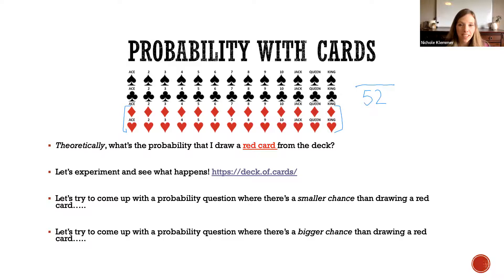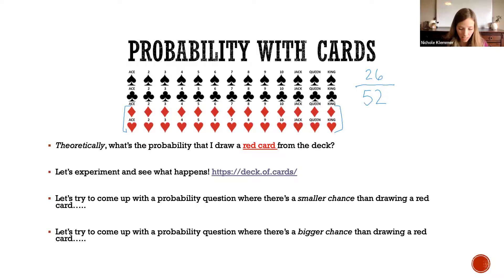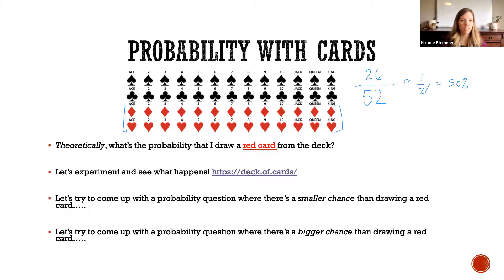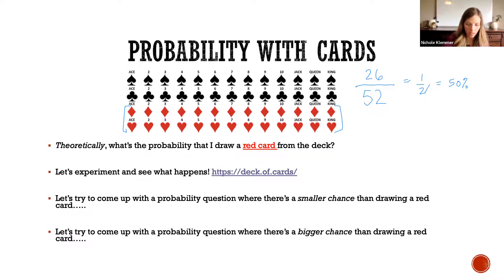There are 26 red cards out of 52, so there's a 26-out-of-52 chance of getting a red card. If we reduce that we get one-half, which is also 50%. If you just looked at that picture and said half of them are red so the chance is 50%, that's good too. There's a 50% chance you're going to get a red card. Let's see what happens in real life — I'm going to pull up a card simulator.